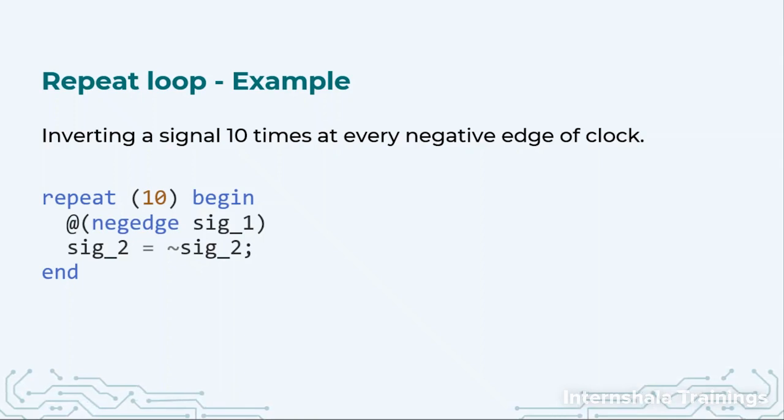And in between the begin and end, we are going to do the process of clock generation but only for 10 times. So we say repeat 10 times, between begin and end we say at the negative edge of signal 1—signal 1 is our controlling signal—this is controlling signal 2. The value of signal 2 complements. So this will happen only for 10 times.